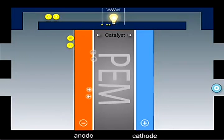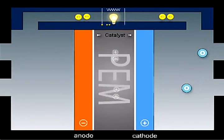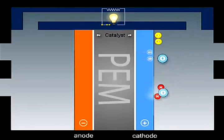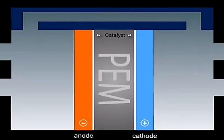On the oxygen side of the membrane, the protons and the electrons react with oxygen from the air in the presence of a second catalyst layer, generating water and heat.